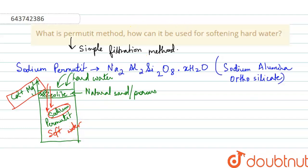So this is the basic idea how it takes place. You can write for explaining, you can write that hard water is passed through zeolite.